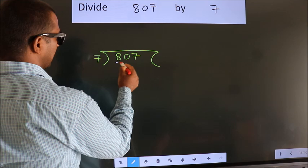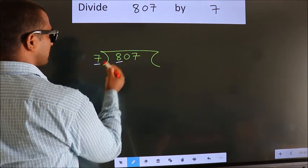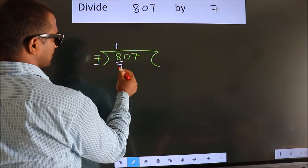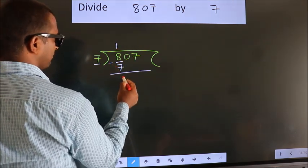Here we have 8, here 7. A number close to 8 in 7 table is 7 once 7. Now we should subtract. We get 1.